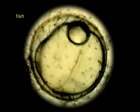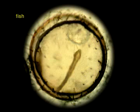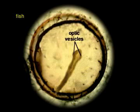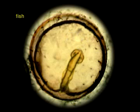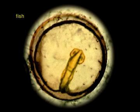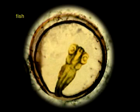Back when the body of the embryo is just a long tube of cells, the brain begins to form at one end of the tube. Soon afterward, two smaller tubes grow outward from the developing brain. These tubes, called the optic vesicles, begin to make the basic structures of the eye.